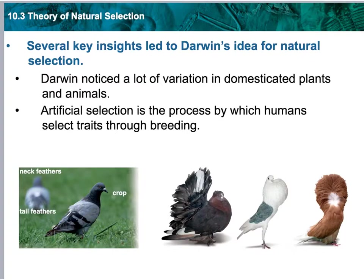Darwin recognized that domesticated animals and plants — things that humans have dealt with, whether it was what Gregor Mendel was doing with pea plants or what people do with horses, dogs, and cattle — we domesticated them and noticed various little variations, small changes. We have different breeds of dogs. Whenever human beings manipulate animals and plants for their benefit, that is called artificial selection. The human is selecting the traits that they want.